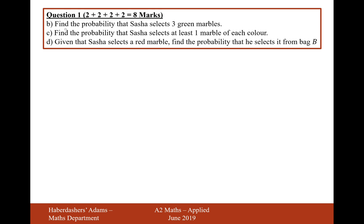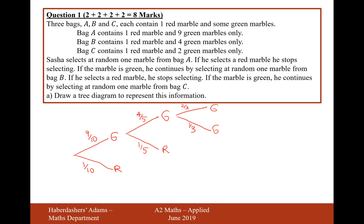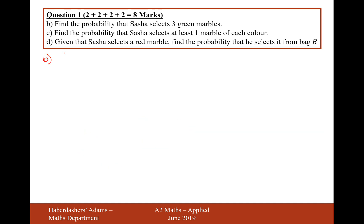Part B is: find the probability that Sasha selects three green marbles. That will be going along the three green branches, so that would be nine over ten times four over five times two over three. Typing that into the calculator gives us an answer of 12 over 25 when the fractions are all simplified.